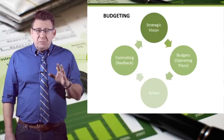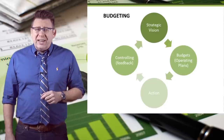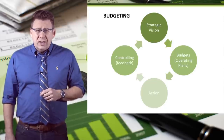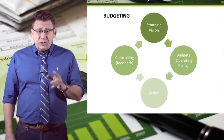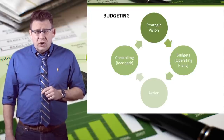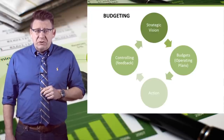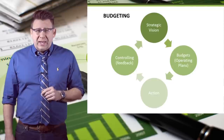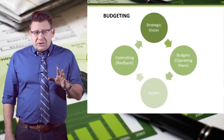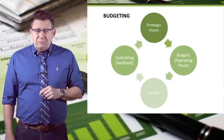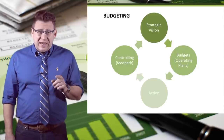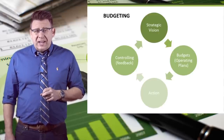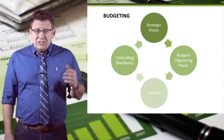Budgeting assists in planning, acting, controlling, and developing strategy. Companies' strategies lead to detailed plans, which in turn lead to actions. Results are then compared to budget to provide managers feedback — this is part of the controlling function of management. This feedback allows managers to take corrective action and, if necessary, revise strategies, which starts the cycle over.